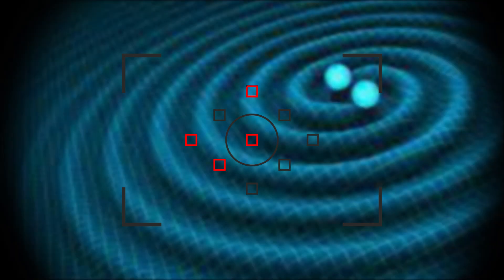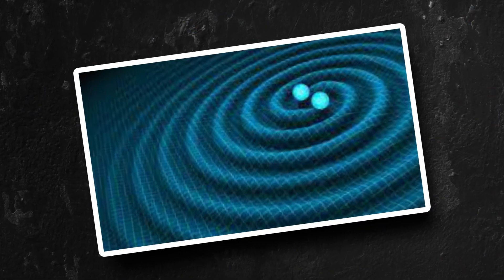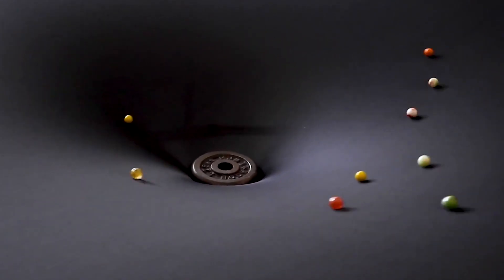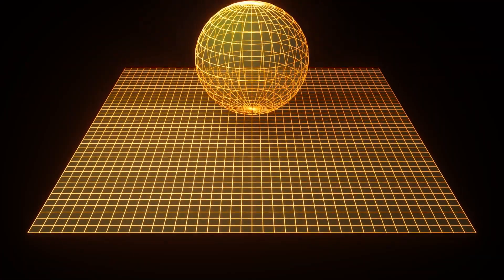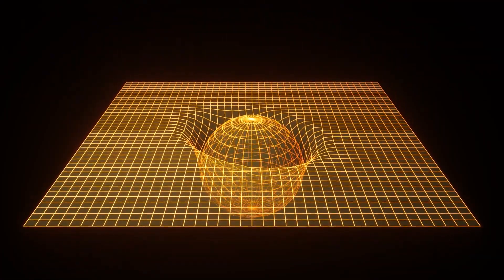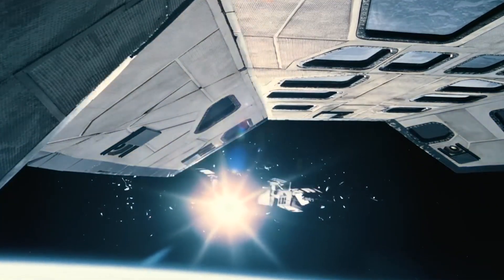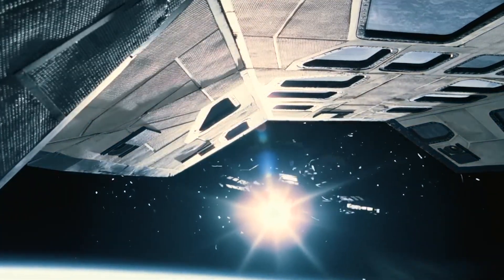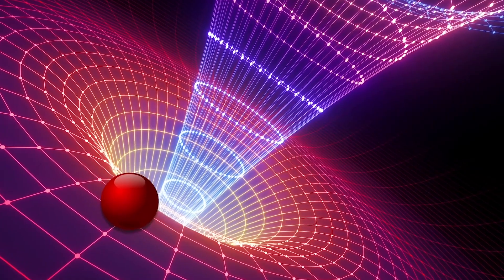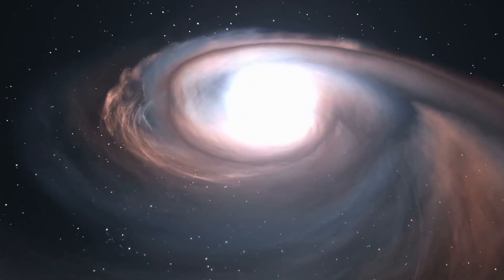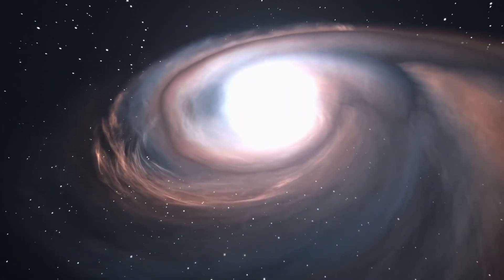To visualize this, picture a rubber sheet stretched taut representing the fabric of spacetime. Place a heavy ball like a planet in the center, creating a dip in the sheet. Imagine rolling a smaller ball representing a spacecraft along this curved surface - it will follow a curved path, mirroring how gravity bends the path of light and slows down time.